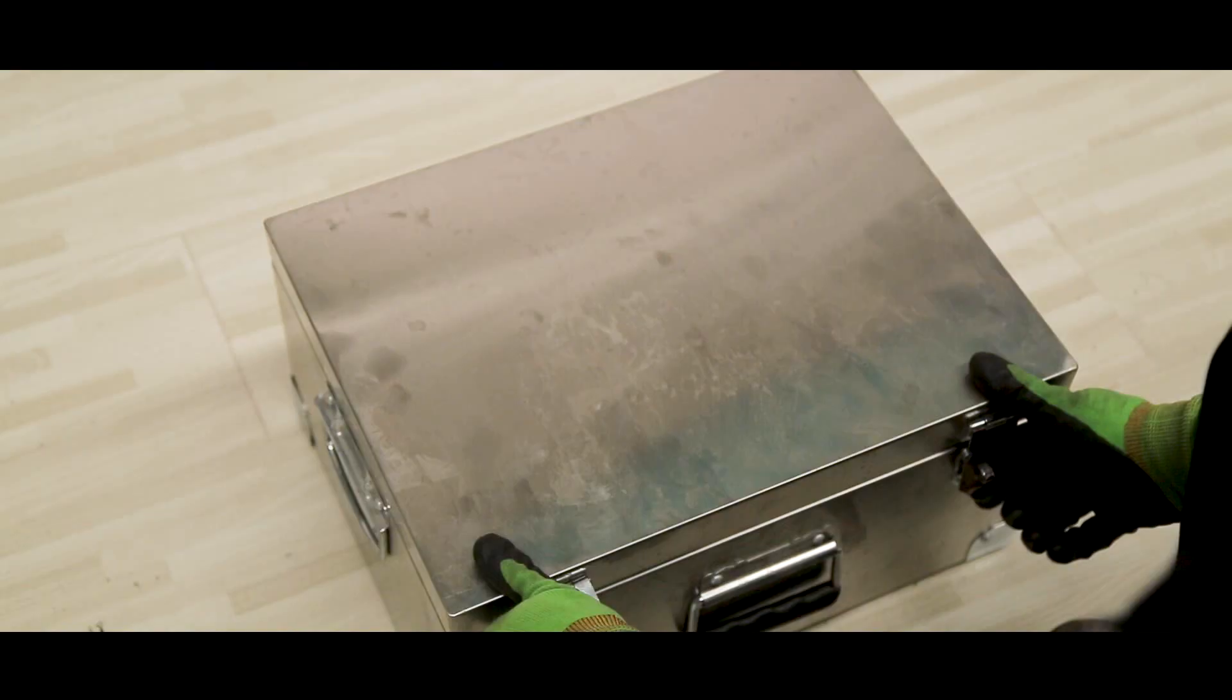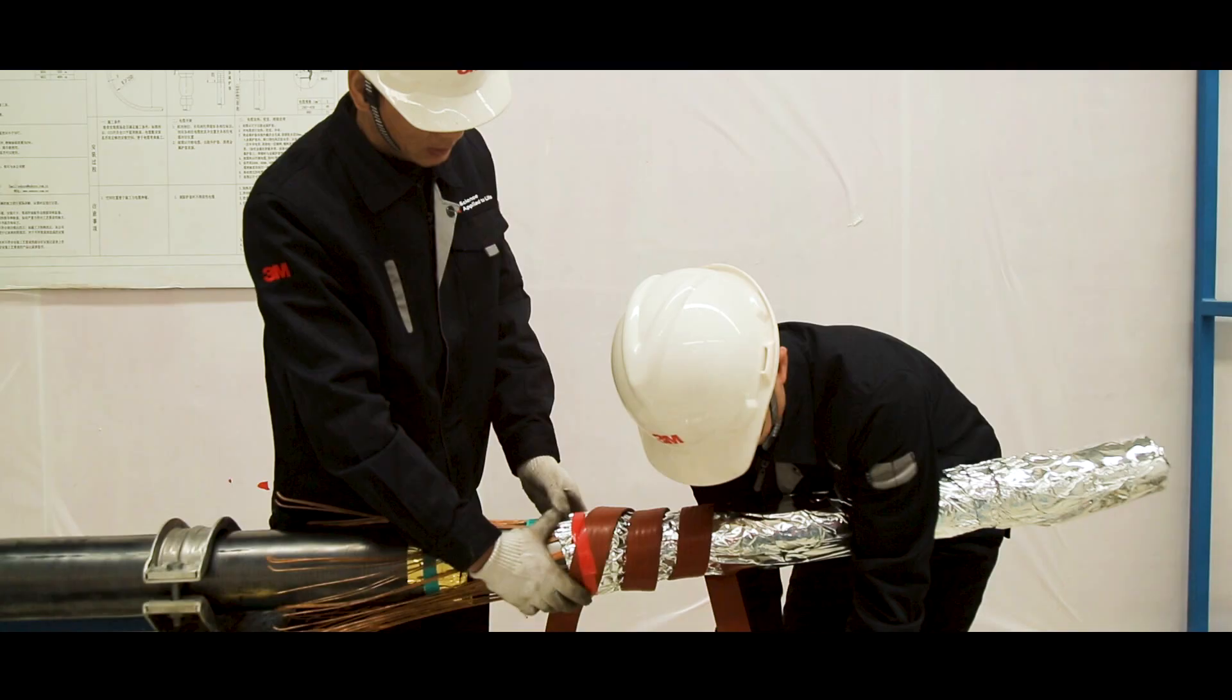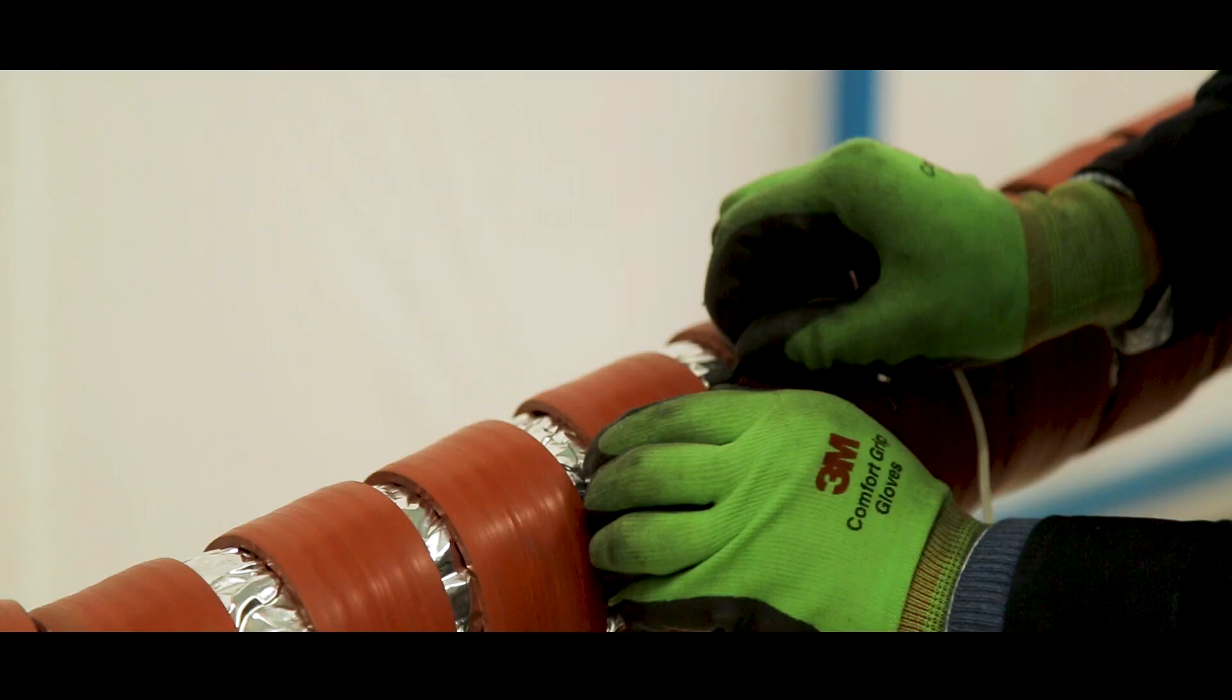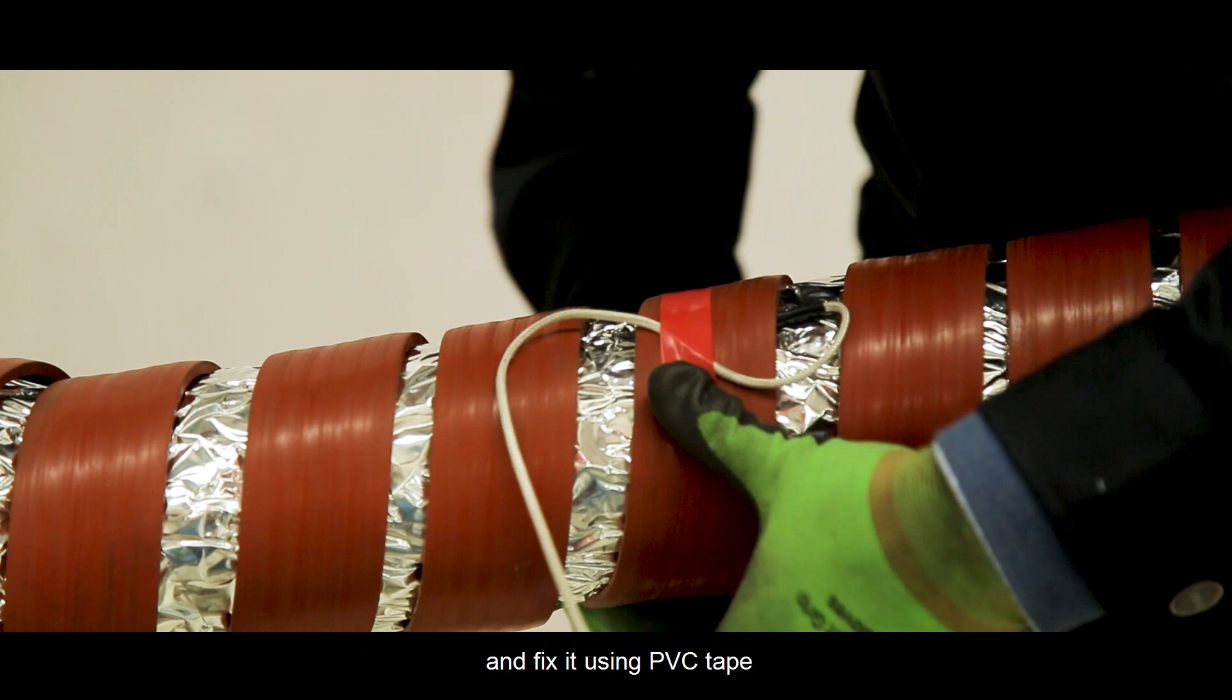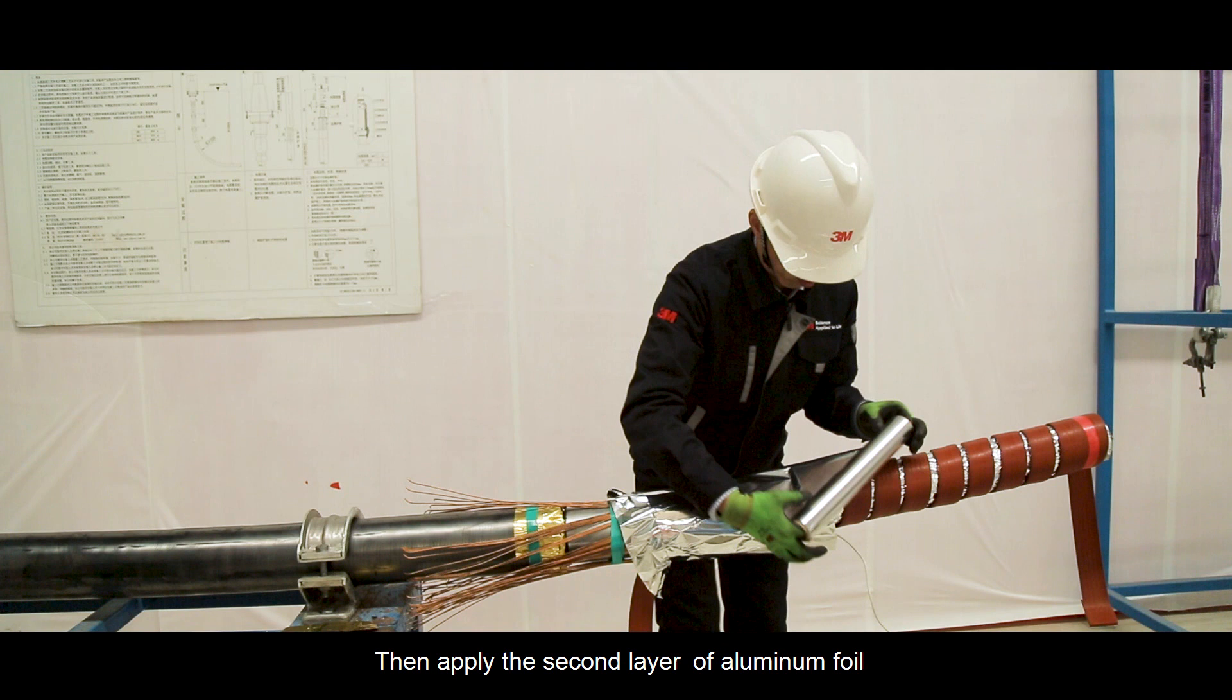Apply aluminum foil on the cable. Overwrap with evenly distributed heating tape. Insert temperature sensor under the heating tape and fix it using PVC tape.